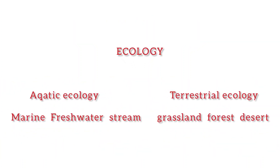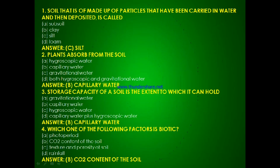These are the old classifications of ecology. The modern classifications include two types: aquatic ecology and terrestrial ecology. Aquatic ecology contains three types — marine ecology, freshwater ecology and stream ecology. Terrestrial ecology is also of three types — grassland ecology, forest ecology and desert ecology. Now let's move to the main part of our video, which is MCQs.